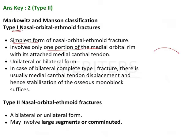In addition to that, the medial canthal ligament — you have the lateral canthal ligament and the medial canthal ligament, with the medial attachment on the medial wall of the orbit, attached to the nasal bone. This attachment is intact in Type 1 fractures.